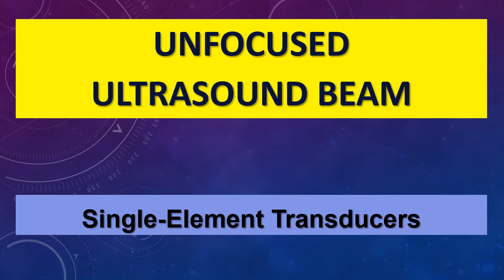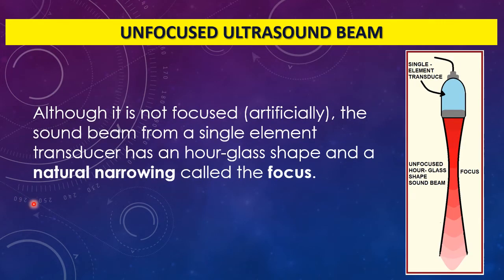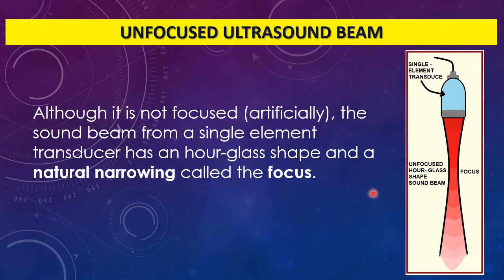Welcome to another lecture in ultrasound physics. We are talking about the ultrasound beam, sometimes called the unfocused beam. The unfocused beam usually comes from a single element transducer. How can an unfocused beam have a focus? As you see here, the single element transducer emits a sound beam with a narrowing — this is called the focus. This focus is a natural, native focus, not made by humans, so there is no artificial focusing.